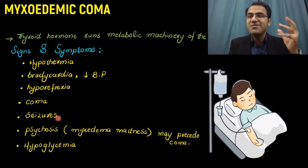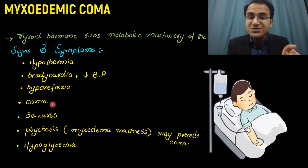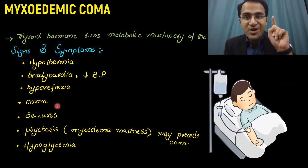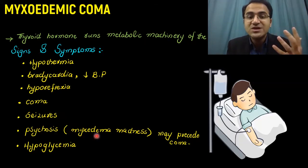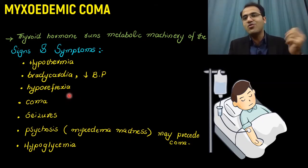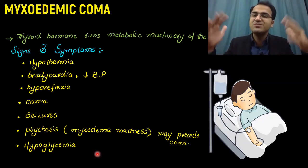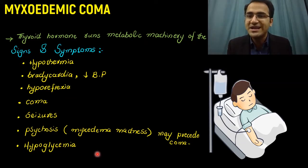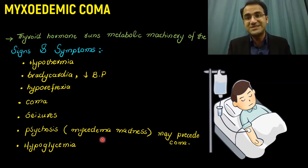Seizures occur due to concomitant hyponatremia in these patients. Before these patients get into myxedema coma, they get psychosis and slowing of the brain, which is called myxedema madness — myxedema madness precedes myxedema coma. Patients are unable to maintain their glucose level since the metabolic machinery has come to a grinding halt, and therefore these patients have hypoglycemia.